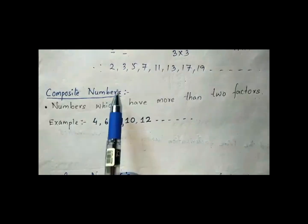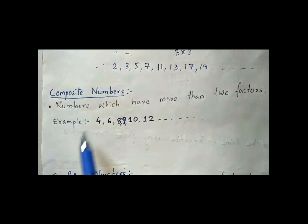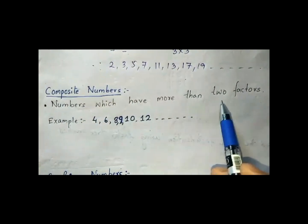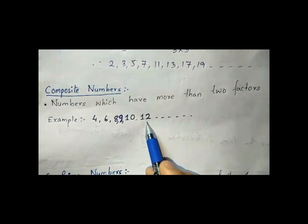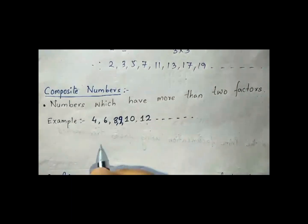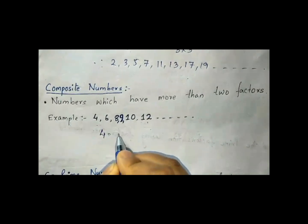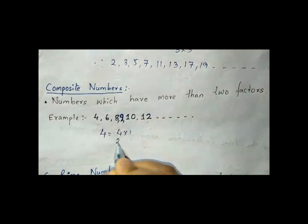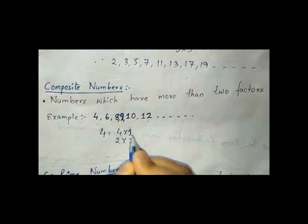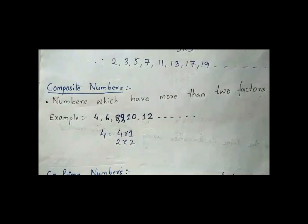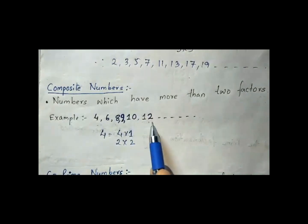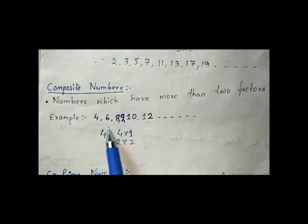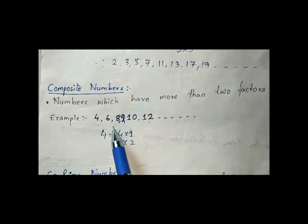Now let us see what are composite numbers. Numbers which have more than two factors are called composite numbers. Now 4 has how many factors? Three factors — so 4 is a composite number. In the same way, 6, 8, 9, 10, 12 — they have factors more than 2, that is why they are composite numbers.